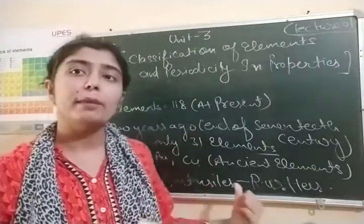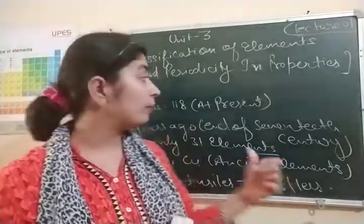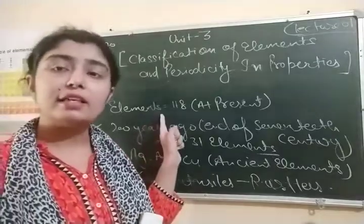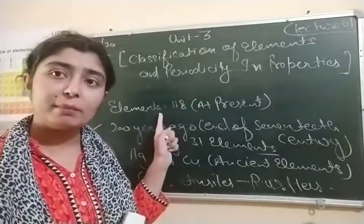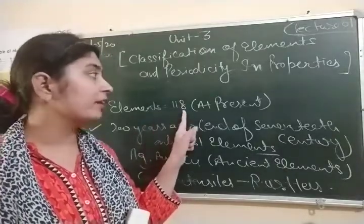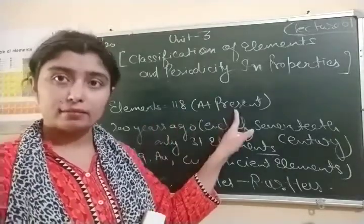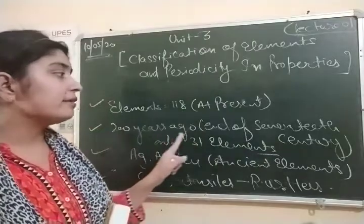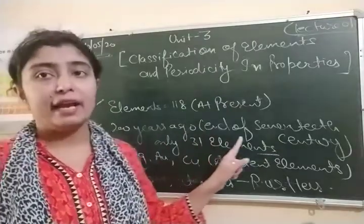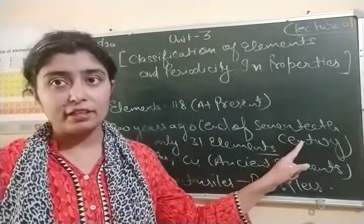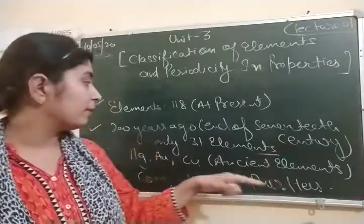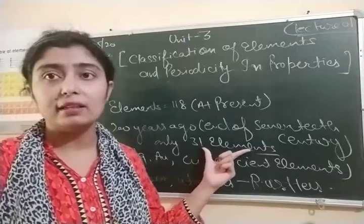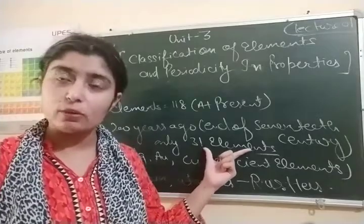So let me mention some points. The first point is: at present, how many elements are in the environment? 118. Okay. So, 200 years ago, meaning at the end of the 17th century, how many elements did we have? 31 elements.